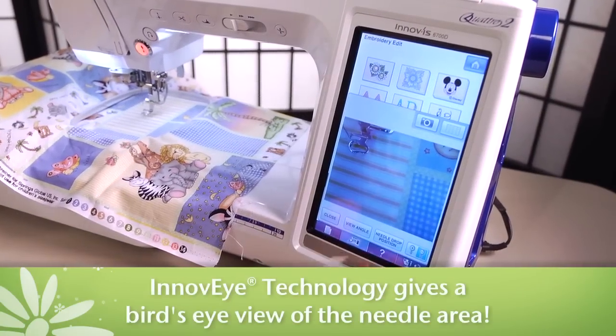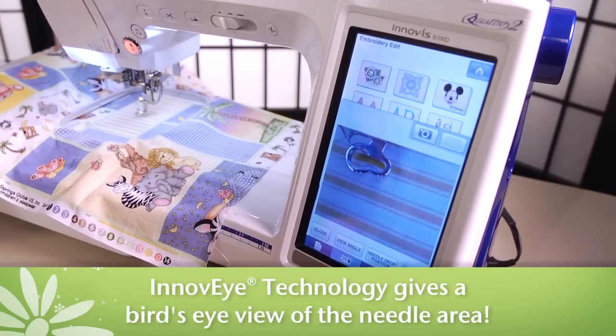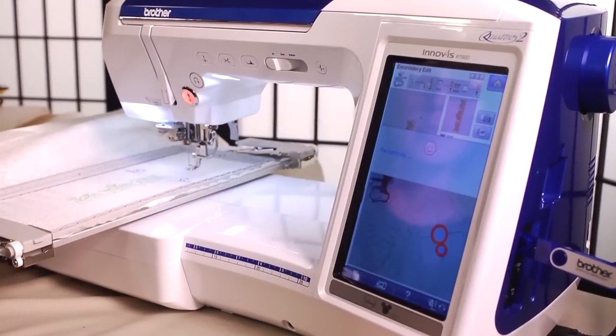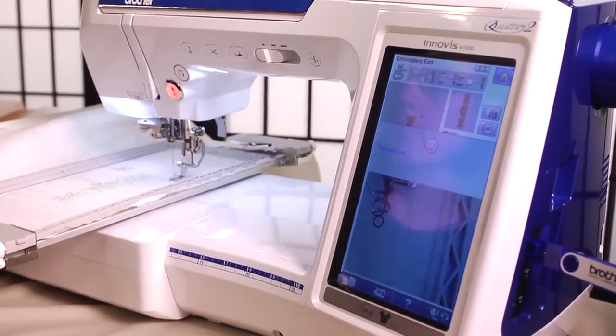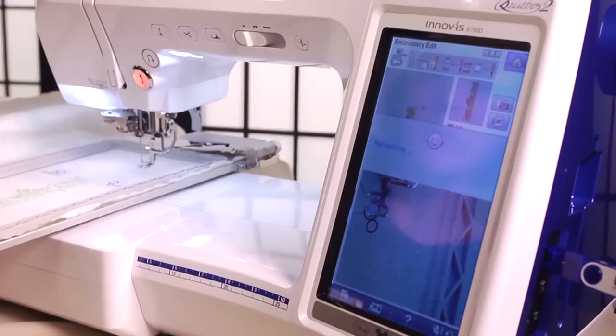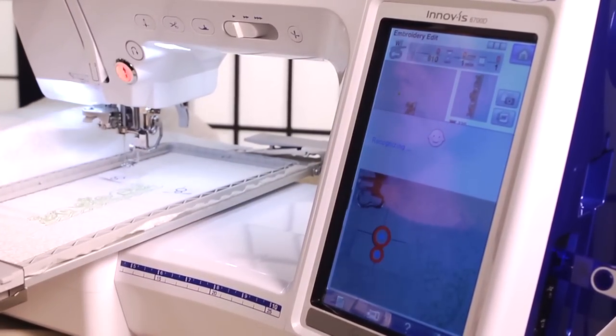The Innovae technology uses a camera-like device to deliver a bird's-eye view of the needle area, so you see what the needle sees. Those who love the Quattro rave about the precision the Innovae and the Snowman embroidery positioning marker provided in the first generation machine, and both are included and improved in the Quattro II.